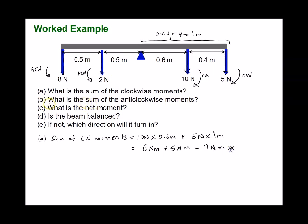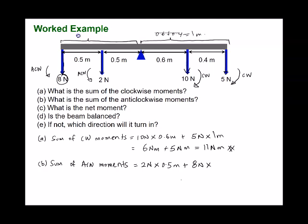The sum of anti-clockwise moments is: 2 N × 0.5 m, plus 8 N × 1 m (adding 0.5 m because perpendicular distance is measured from the force to the pivot). This gives 1 + 8 = 9 newton-metres.